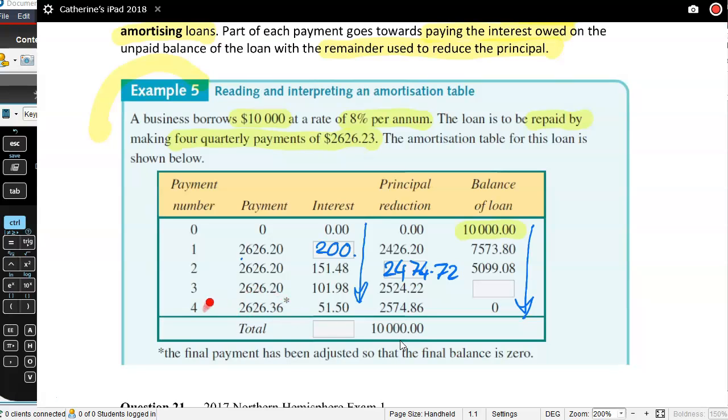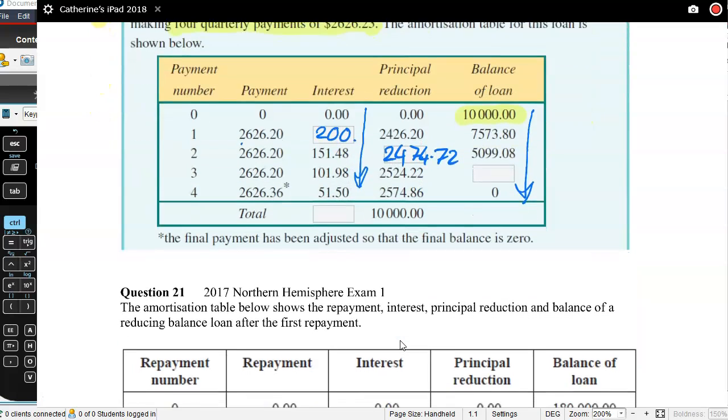This last one has got a little asterisk. Why? Because with the way it's worked out, if we just paid the $2,626.20, we'd still have like 16 cents left over, something like that, for the amount that we still owe. And the bank said, no, what you'll do is on that last payment, you'll pay just that little bit more so that we can get it paid off in the four payments.